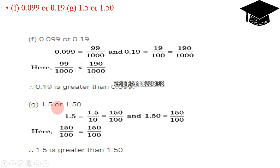Next, 1.5 or 1.50? Check it out. 1.5 is equal to 15 by 10, right? And 1.50 is equal to 150 by 100. So here 150 by 100 is equal to 150 by 100. That means therefore 1.5 is greater than 1.5. Is it true? No. This is a typing mistake. Both are equal.